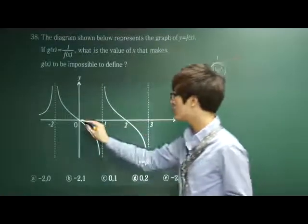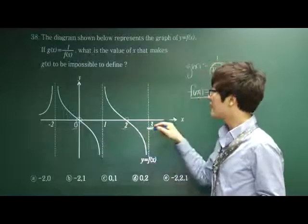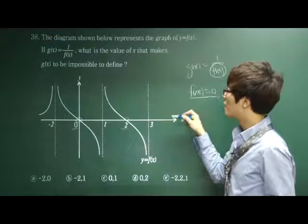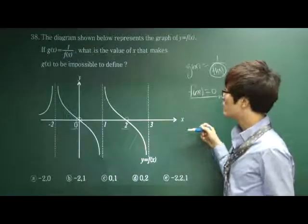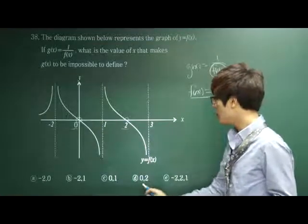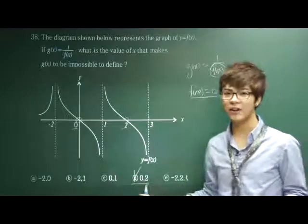When f(x) is equal to zero, I see when x is zero and when x is two, then f(x) gets zero. Therefore, the value of x is equal to zero or two, which is in our answer choices. D is the correct answer.